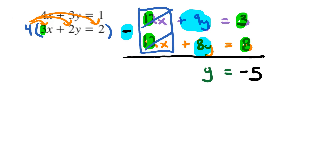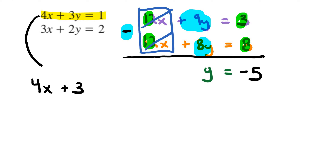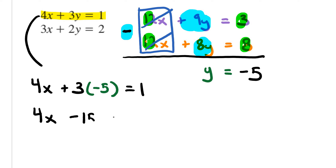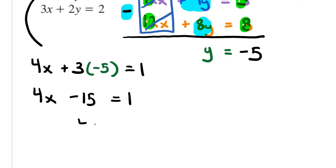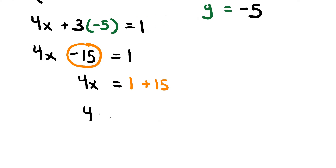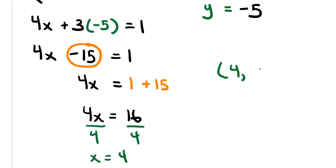Let's go back to the first equation: 4x plus 3y equals 1. Now I'm going to solve for x. So 4x plus 3 times the y variable, and y has a value of negative 5, equals 1. So 4x plus — well, 3 times negative 5 is negative 15 — equals 1. Then I take the negative 15 and move it to the other side: 4x equals 1 plus 15, which gives me 4x equals 16. Divide both sides by 4, and x equals positive 4. So my final answer is 4 comma negative 5.